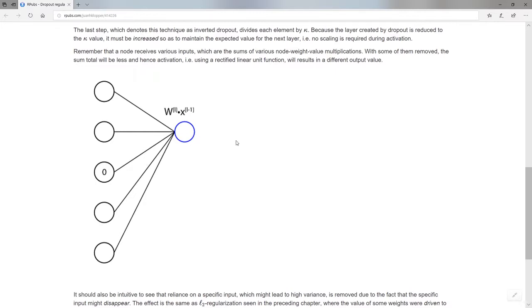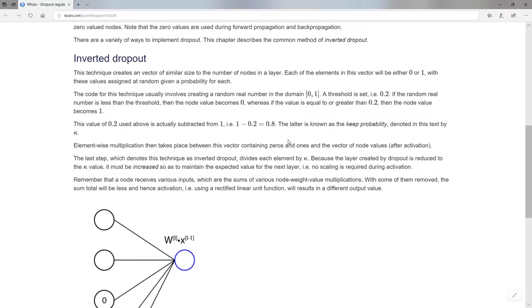Imagine we use a rectified linear unit activation for this node. It is now going to be smaller than it would have been before, because during all of those additions from each of these inputs, some of them are now going to be zero. We have to compensate for that somehow. The way that we compensate for that is each of these values that we now have after this multiplication gets divided by the kappa value.